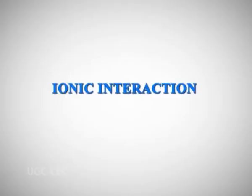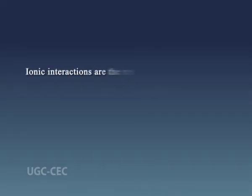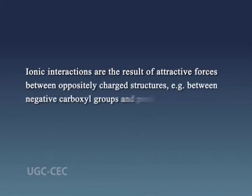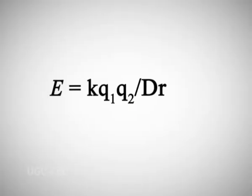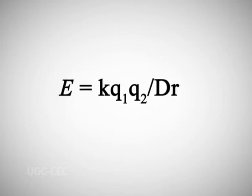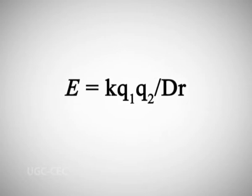Next are ionic interactions. Ionic interactions are the result of attractive forces between oppositely charged structures — for example, between a negative carboxyl group and a positive amino group. These electrostatic forces amount to about 20 kJ per mole in aqueous solution. Typically, the electrical charge is readily distributed, so these interactions may lack the directionality of hydrogen bonds or the precise fit of Van der Waals interactions. The strength of an electrostatic interaction is given by Coulomb's law: E is the energy, Q1 and Q2 are the charges of the two atoms, R is the distance between the two atoms, D is the dielectric constant of the medium, and K is the proportionality constant.